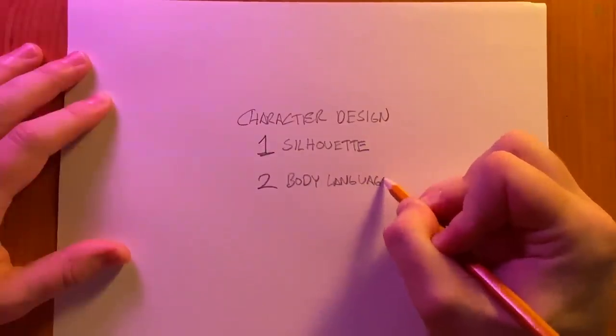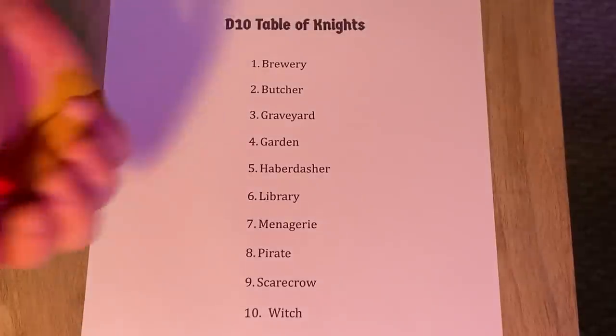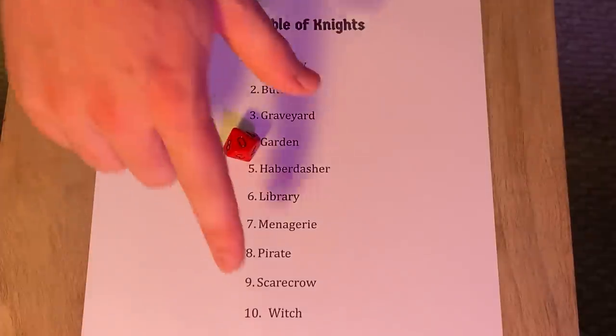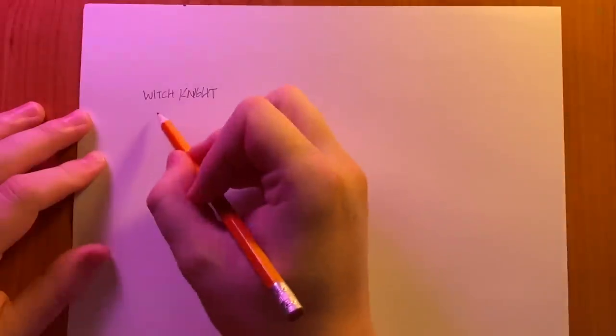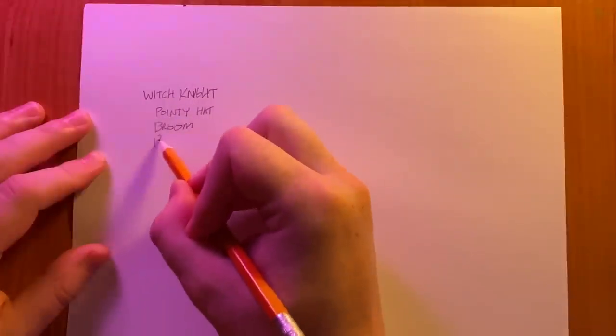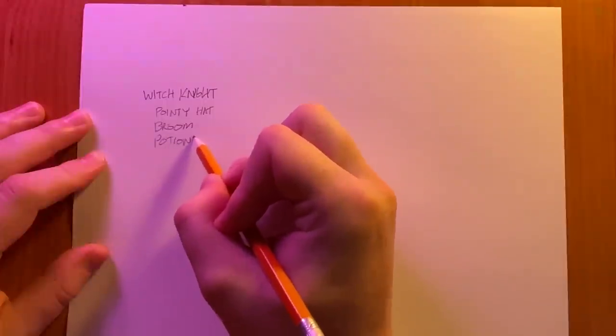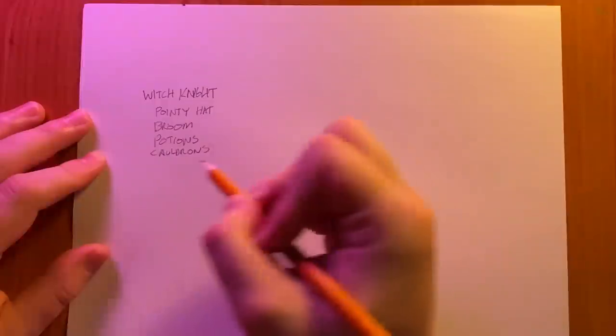In our crash course in character design we are going to look at two major points: silhouette and body language. For my money these are the best things to practice. I made a random table of different kinds of knights and rolled a ten, so I'm drawing a witch knight today. The first thing I'm going to do is make an inventory of symbols, a list of words and associations that exist around knights and witches that I can either deploy or subvert.